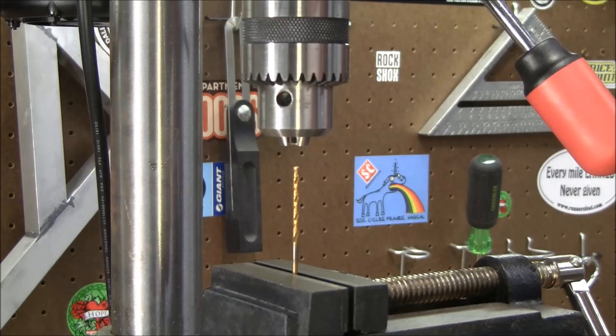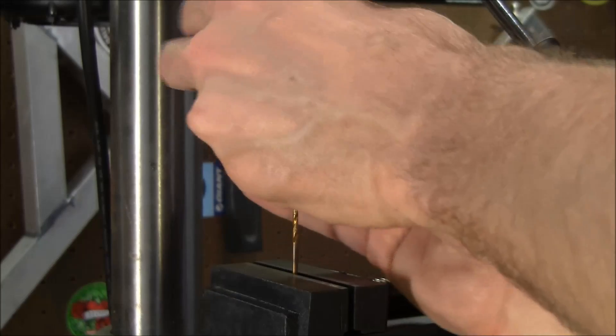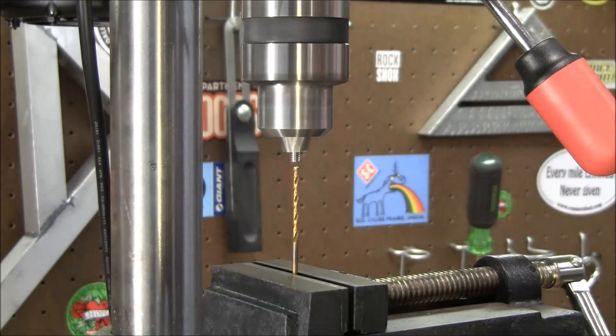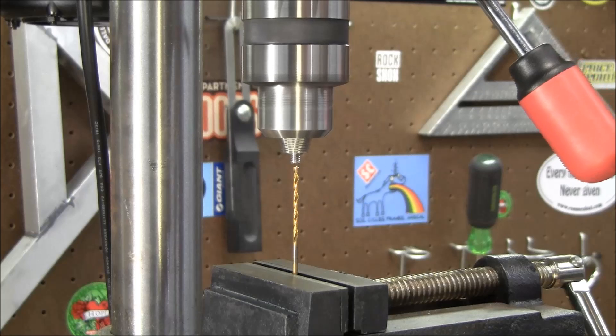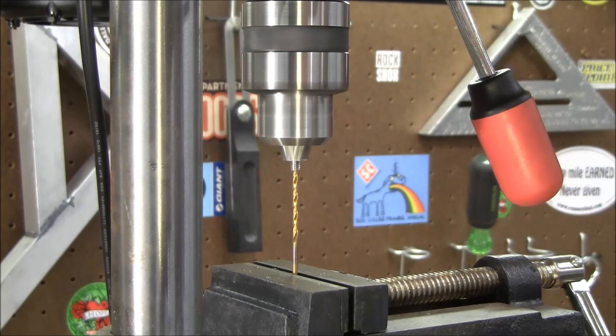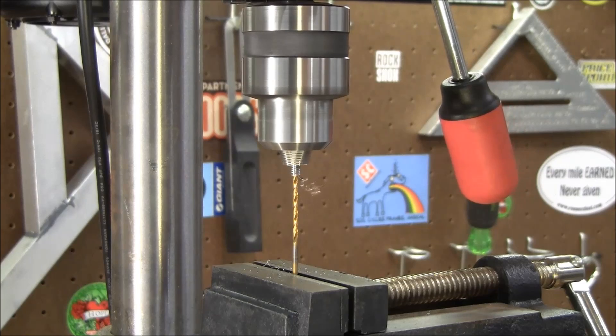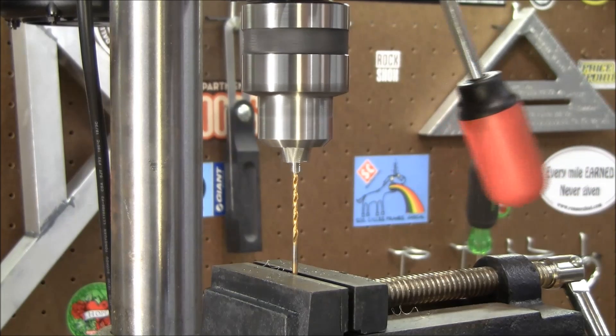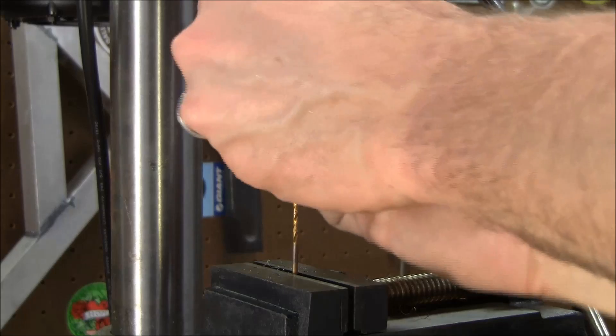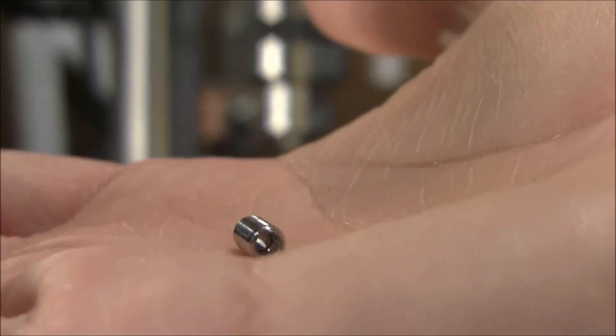So I'm going to put the set screw back into the drill chuck, upside down, so that we're drilling from the top of the set screw. Remember, we want to drill only about halfway through. There's our larger bore about halfway through the set screw.